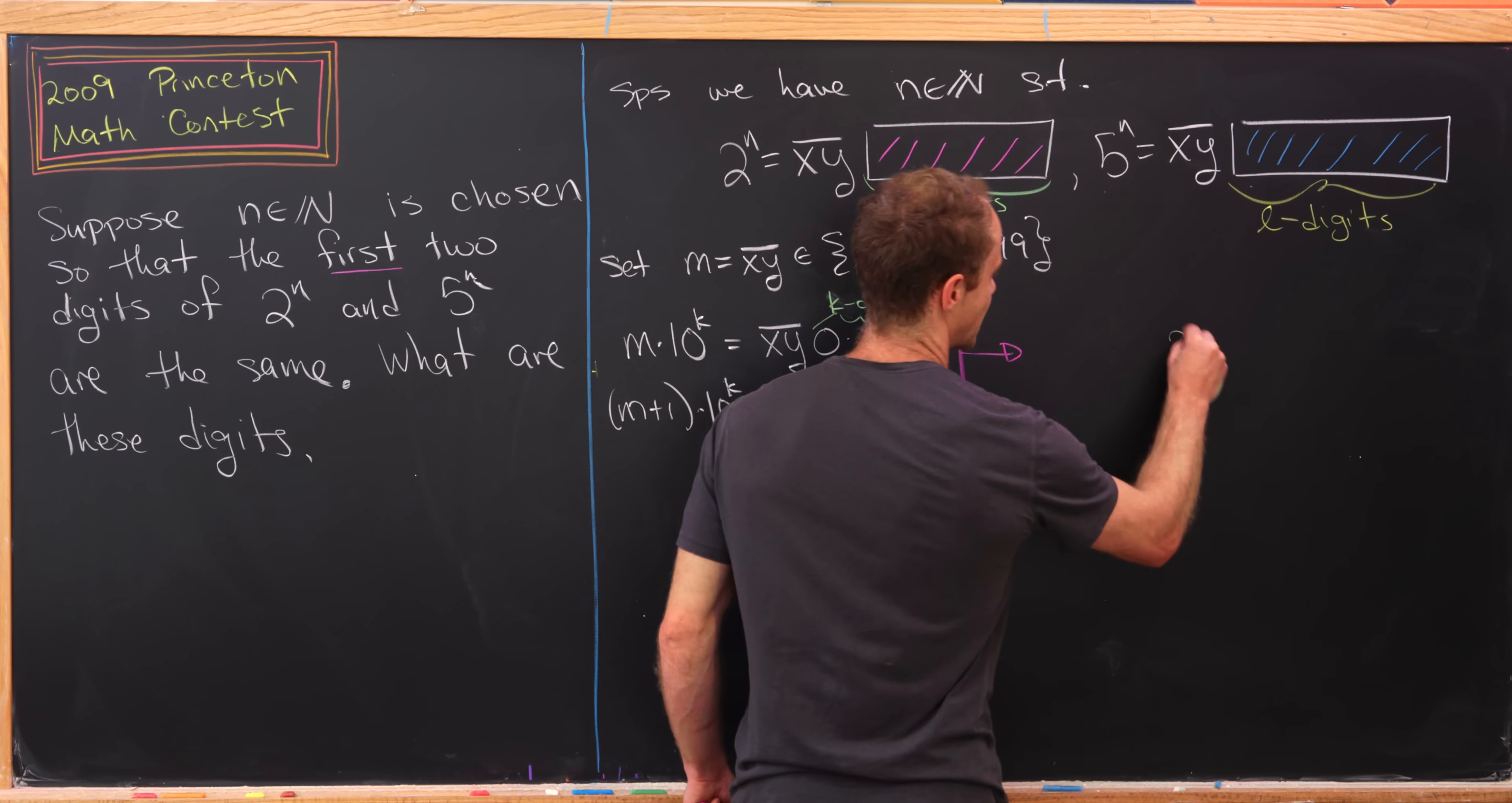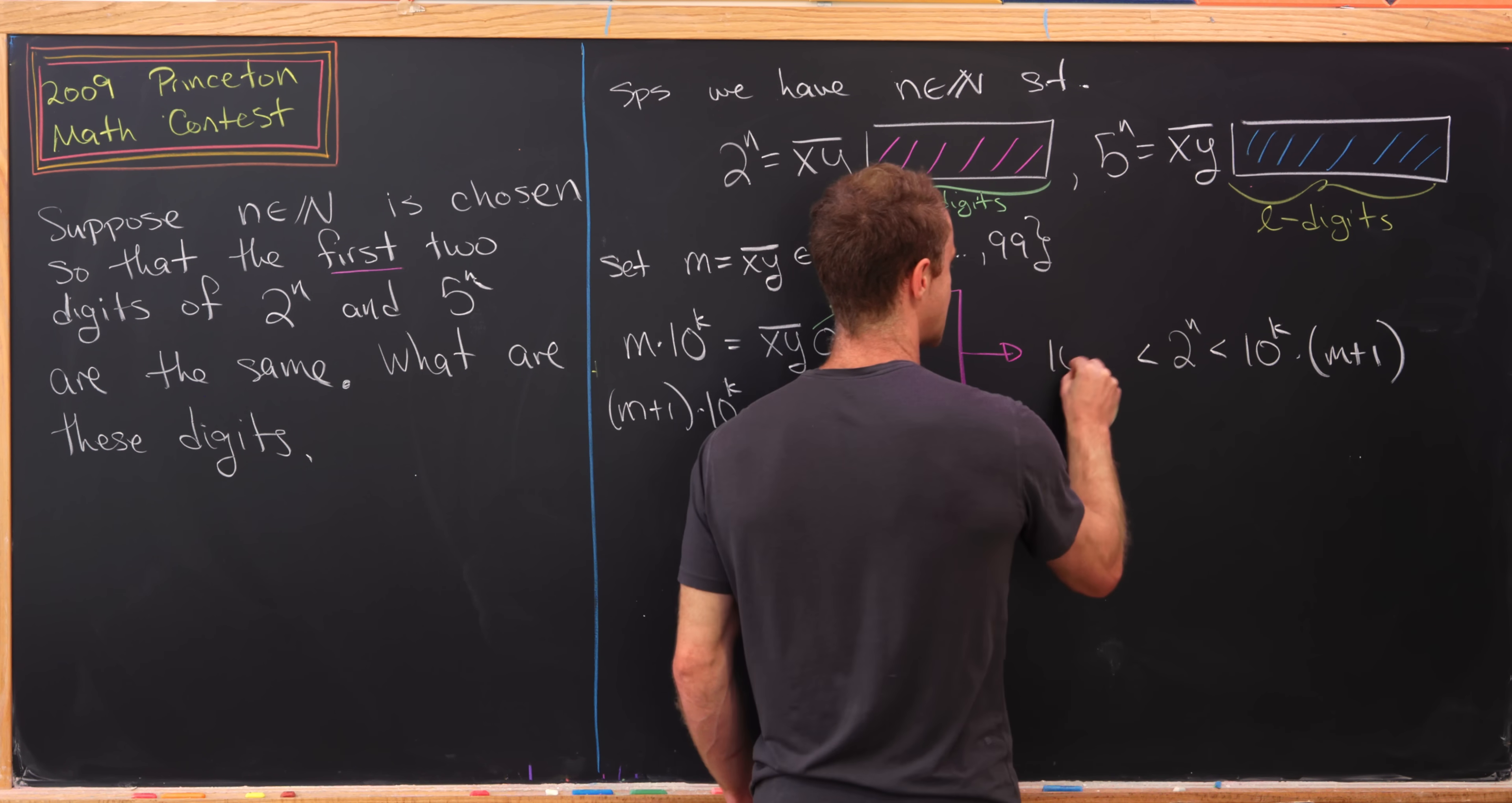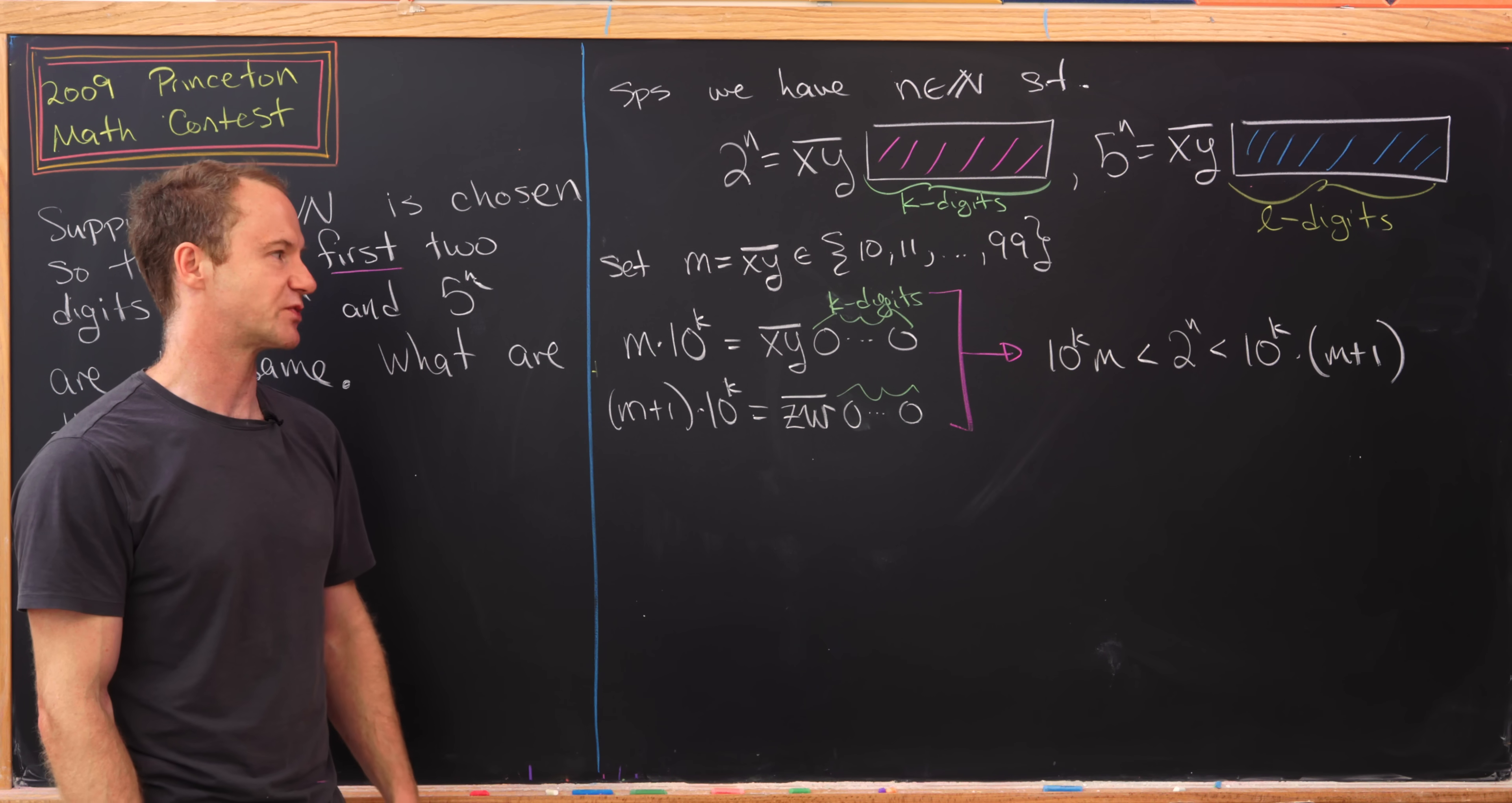We've got 2^n is strictly less than 10^k times (m+1), and strictly bigger than 10^k times m. We know these inequalities are strict because powers of two definitely don't end in all zeros.